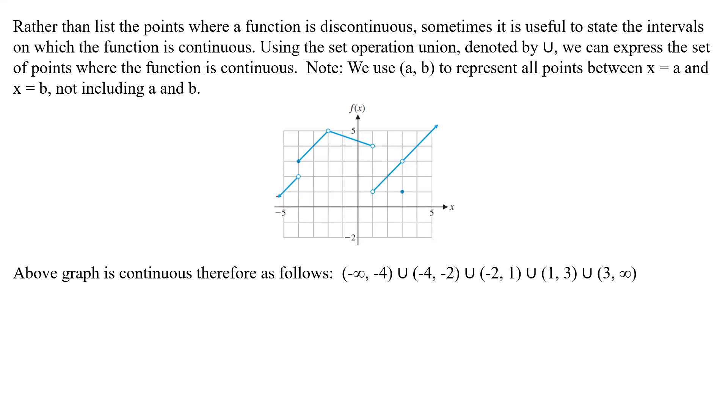So from here, if we go from the left, we're going from negative infinity all the way up to one, two, three, four, negative four, but we don't include four. And so we have that. Then union. Now we start at negative four and we go all the way up to, it looks like negative two. We don't include that. Then union. Then from negative two all the way up to one.